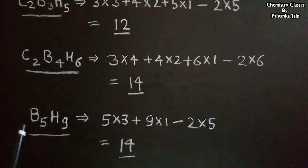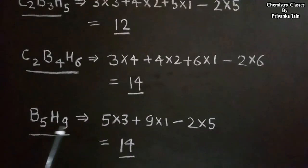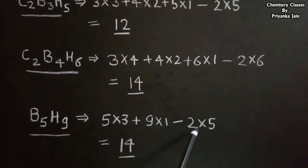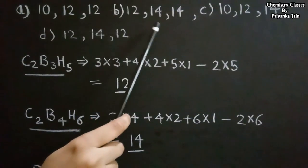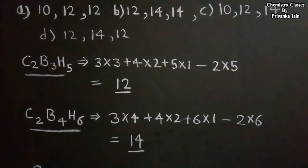For B5H9: 5 boron atoms give 5×3 electrons, 9 hydrogen atoms give 9×1 electrons, minus 2×5 (n = 5). Total skeletal electrons = 15 + 9 − 10 = 14. The answers are 12, 14, 14 — option B is correct.